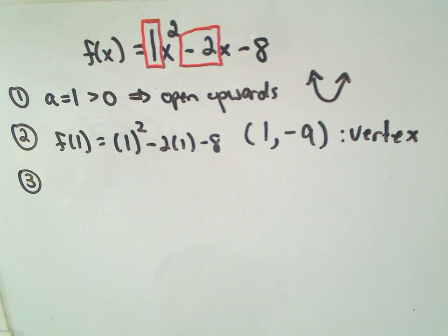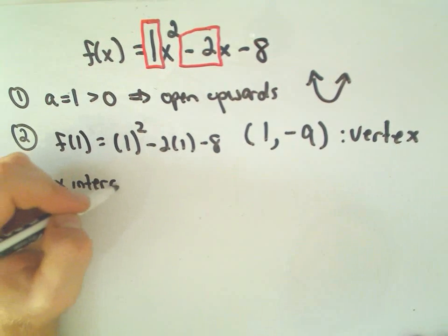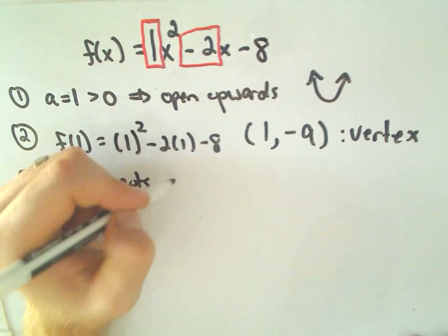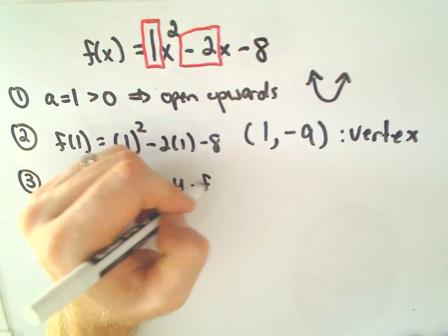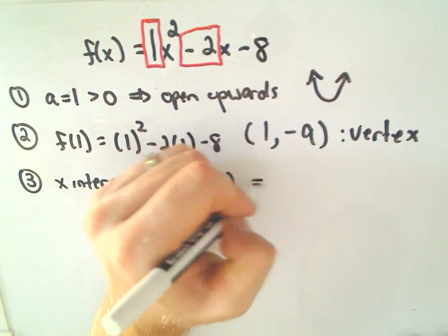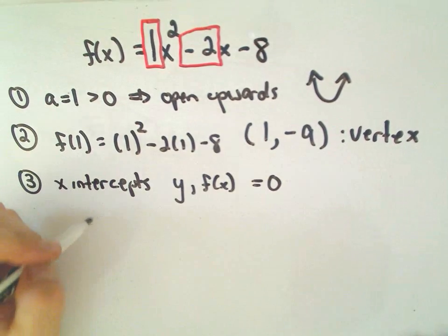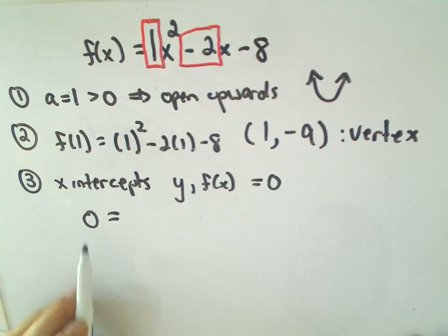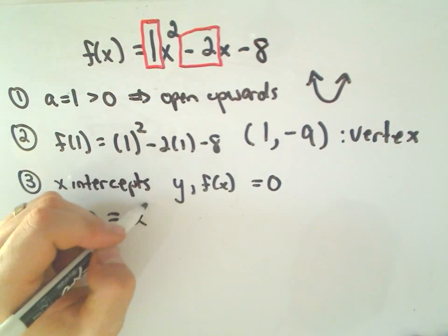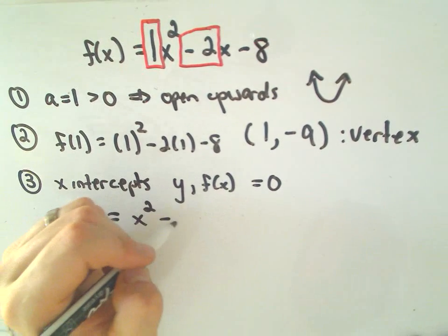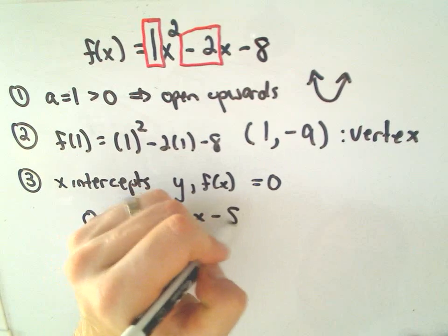Okay, so the third thing, at least in the order I had it written down, was to find x-intercepts. Remember to find x-intercepts, you basically replace the y value, or equivalently the f(x), we set that equal to 0. So if I take my equation and replace f(x) with 0, well, now I have to solve this equation. 0 = x² - 2x - 8.